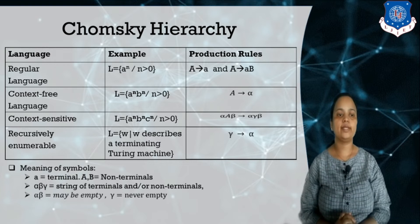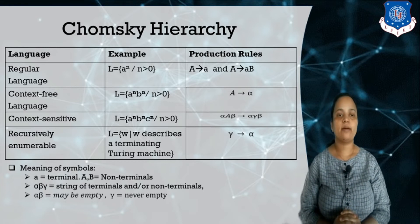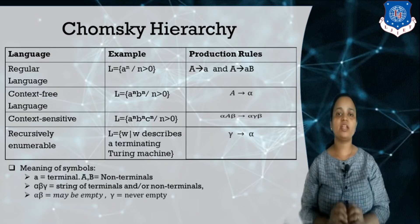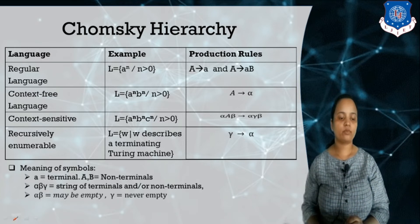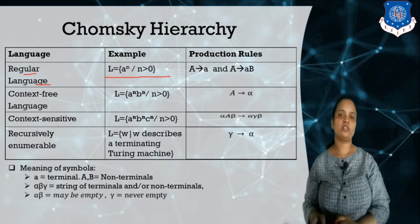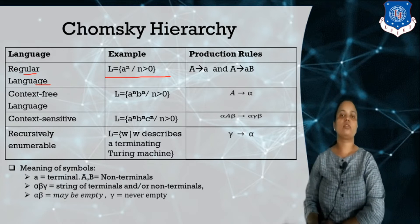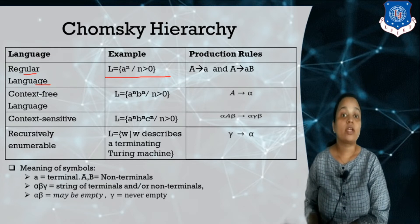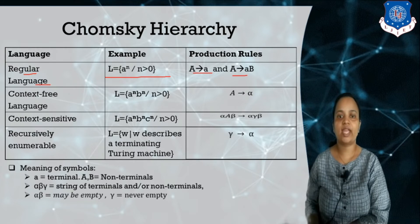Let us look at examples. I have defined four types of languages with examples and the grammar associated with each. For regular languages, the example is the language a^n where n is greater than 0, and this is known as a regular language. Now, how do we define a regular grammar for it?